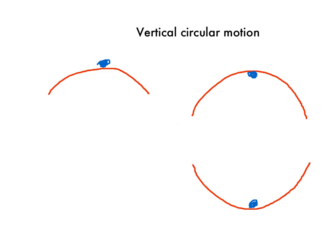Another type of circular motion we consider in Year 12 physics is vertical circular motion. Importantly, we only consider three different situations. It's explicitly stated that we only consider motion at the top and at the bottom of a circle — the inside at the bottom and at the top, and also an object moving around the outside of a circle at the top of its motion.